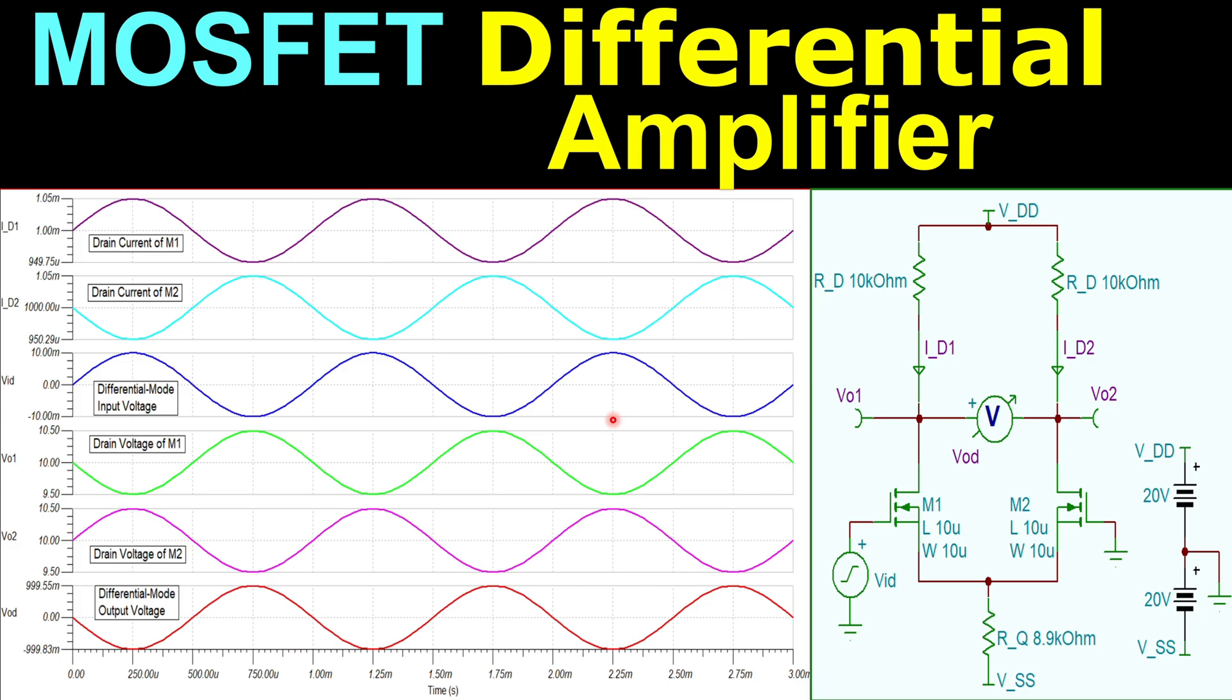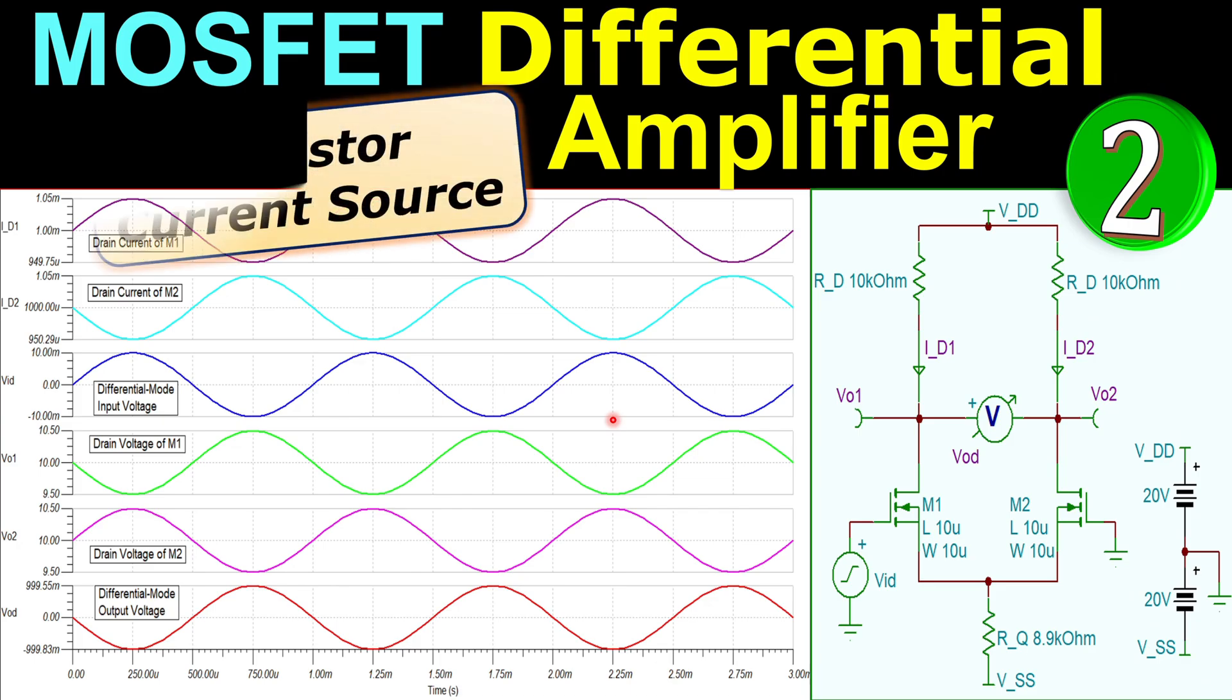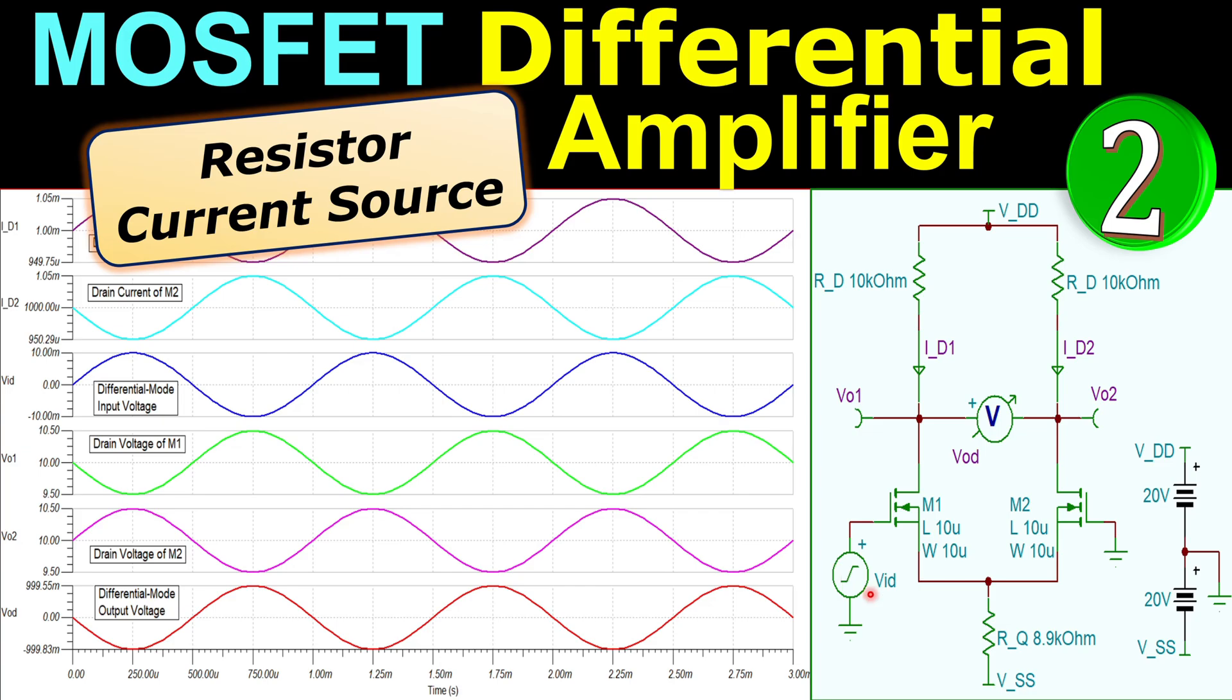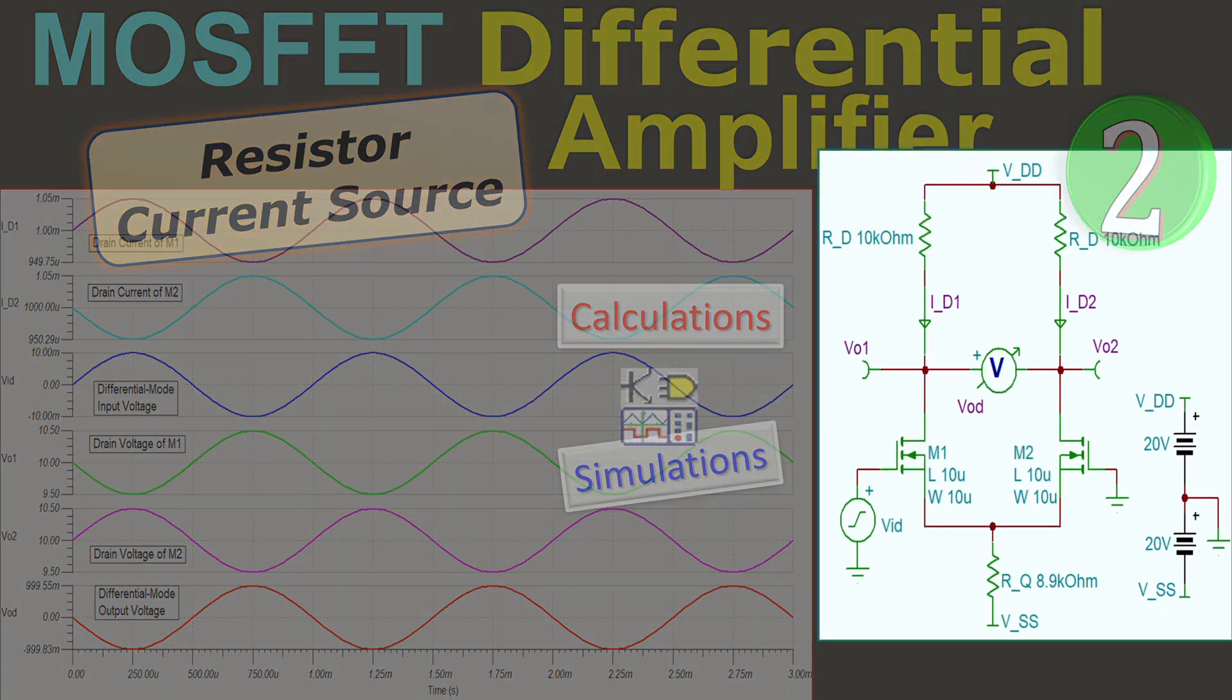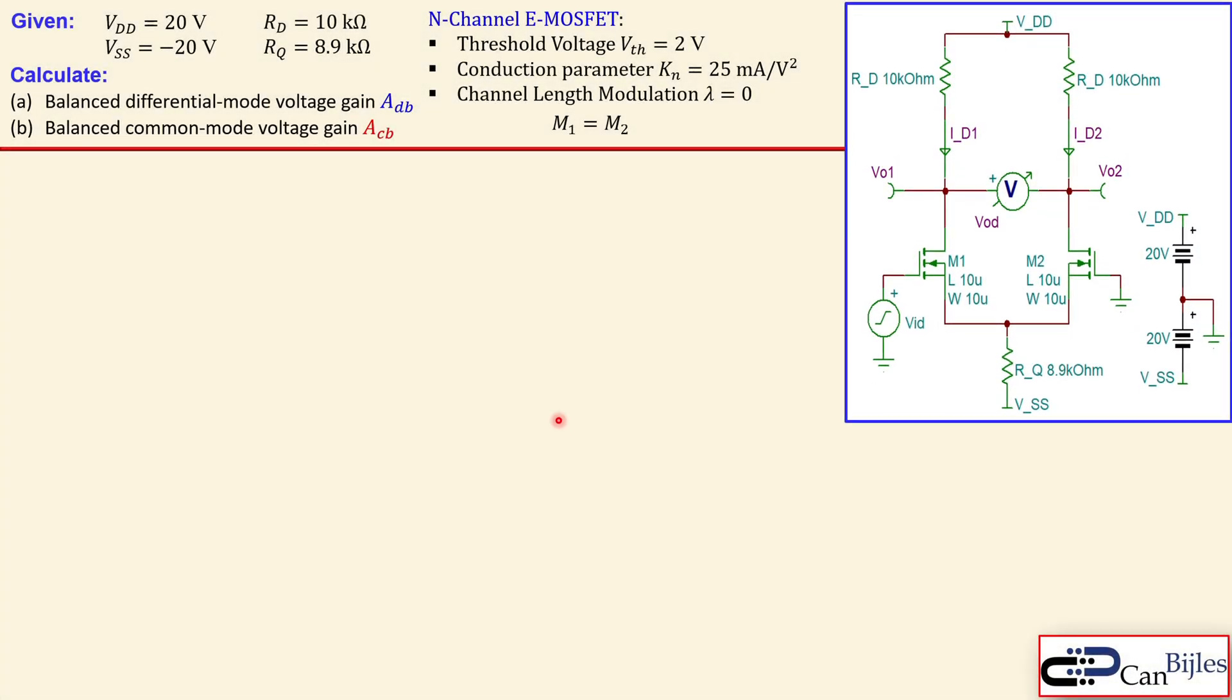Welcome back to a new video about MOSFET differential amplifiers. This is our example number two where we discuss MOSFET differential pairs. In this case we will use a resistive current source as the realization of our current source for the tail current required for this MOSFET differential pair. We will see step-by-step calculations and verify these in SPICE simulations.